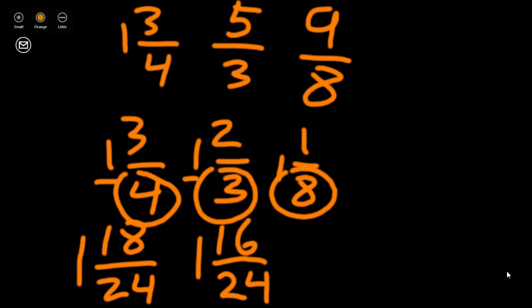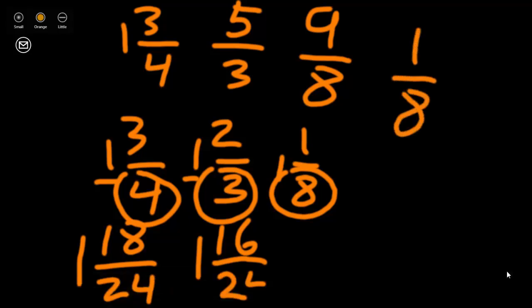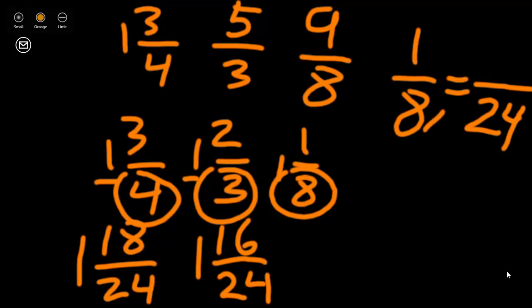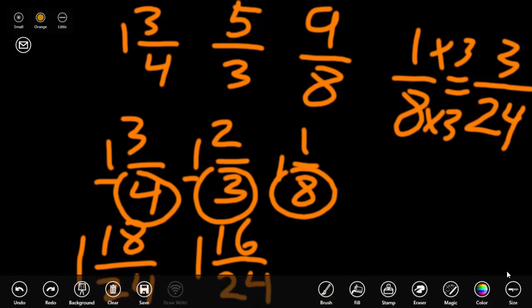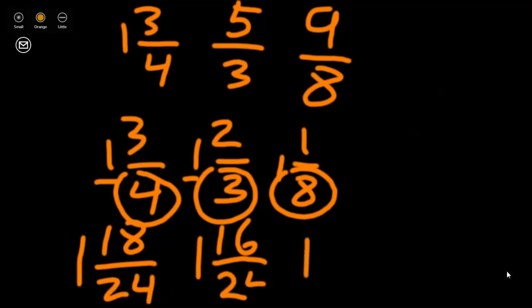Now let's look at 1 and 1/8th. Again, we're ignoring our 1 since we have 1 as a whole number in every one of our mixed numbers. For 1/8th, turning it into an equivalent fraction with a denominator of 24: what do we multiply by 8 to get to 24? We multiplied 8 by 3 to get to 24, so we need to do the same to our numerator. 1 times 3 is 3. Our equivalent fraction for 1 and 1/8th is 1 and 3/24ths.